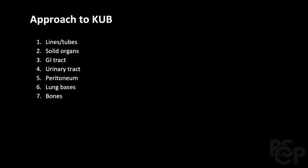The first thing I'd like to talk about is a common approach to reading KUBs. KUB stands for kidneys, ureter, bladder, and it is interchangeable with the term abdominal x-rays — both are the same study, which is an x-ray of the abdomen. The first thing you can look for on a KUB is lines or tubes. For more information on how to identify whether a line or tube is properly positioned, please watch our video on the topic. The second thing is solid organs, third GI tract, fourth urinary tract, fifth peritoneum, sixth lungs, seventh bones — and we'll go through this in the next few slides.